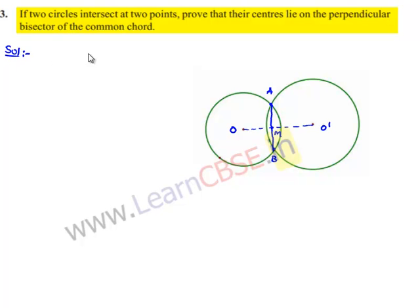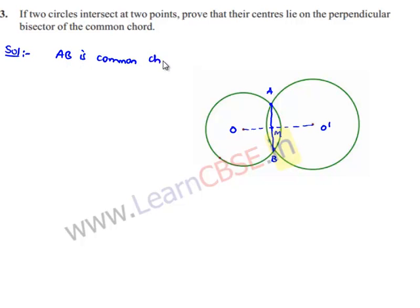We have considered two circles with centers O and O', and AB is a common chord for both the circles. We need to prove that the line joining the centers, that is OO', is the perpendicular bisector of AB, or AB is the perpendicular bisector of OO'.